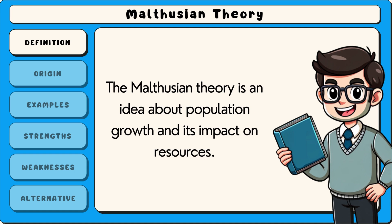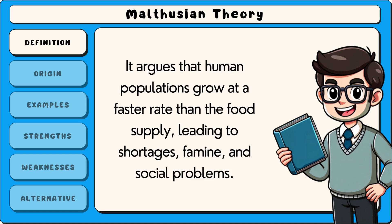The Malthusian theory is an idea about population growth and its impact on resources. It argues that human populations grow at a faster rate than the food supply, leading to shortages, famine and social problems.